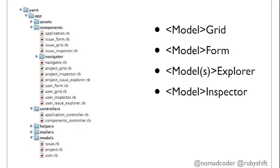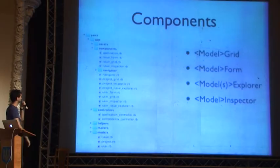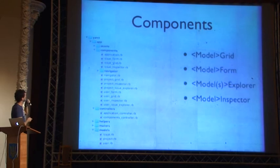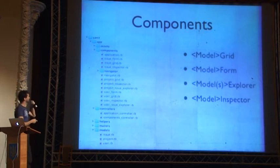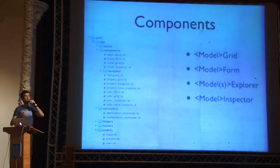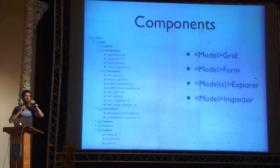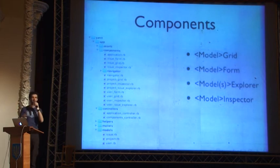Here is more or less all the code you have in the application to start with. I have some naming conventions: a grid that displays issues I call 'issue grid', then there's a user grid and a project grid. There are also forms for editing issues. And there are things I call 'explorers', which allow you to browse through some specific stuff and specific records. And then the inspector, which allows you to inspect a given record.